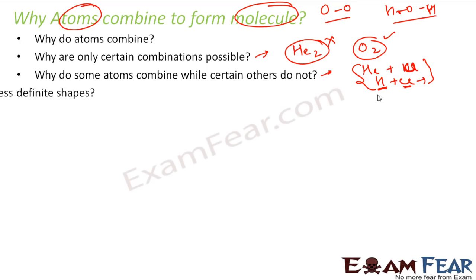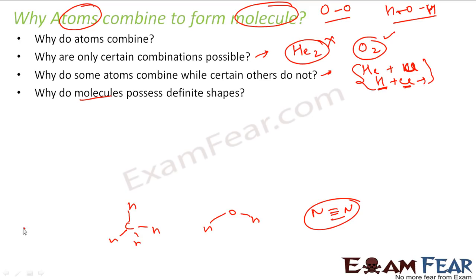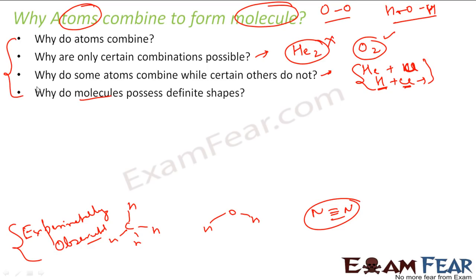We'll also see that molecules have definite shapes, and not all molecules have the same shape. For example, water is bent. Some molecules like nitrogen are straight. CH4 has yet another shape. These shapes are experimentally observed. When we see that the shapes of molecules are different, the question comes to our mind: why do molecules have different shapes? We'll try to answer all these questions in our video.